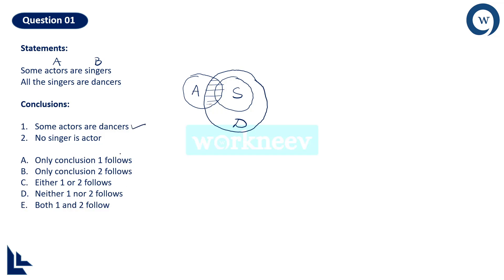The first conclusion is true. I can eliminate option B because it says only conclusion two follows, and eliminate option D because it says neither one nor two follows. Now let us check the second conclusion: No singer is actor. For that to be true, there must be absolutely no common area between actors and singers. But there clearly is a common area between them, so no singers are actors is absolutely not possible. The second conclusion is wrong. Therefore, only some actors are dancers follows — the answer is option A.